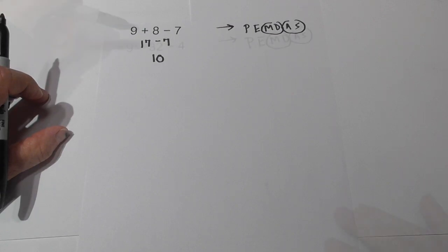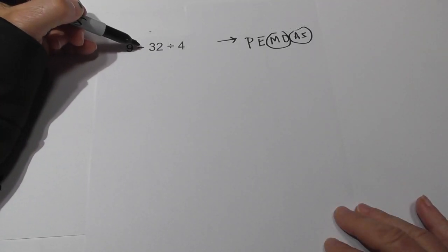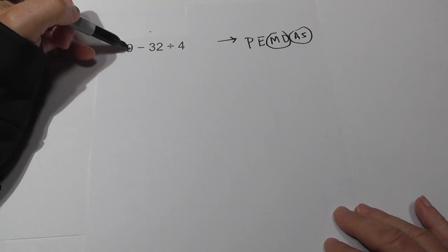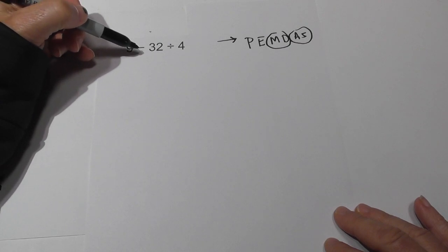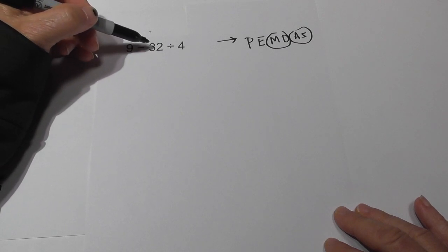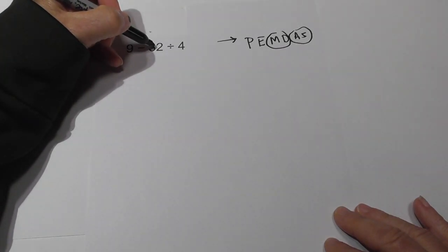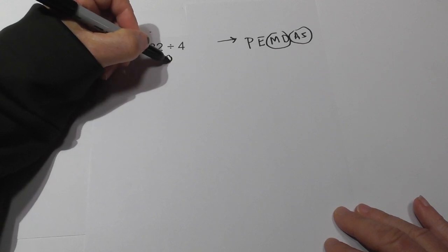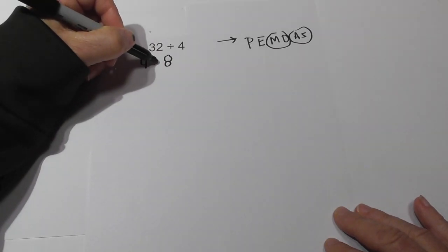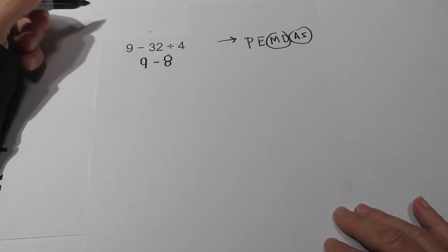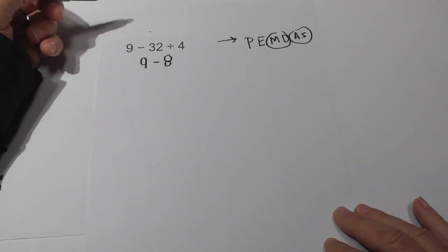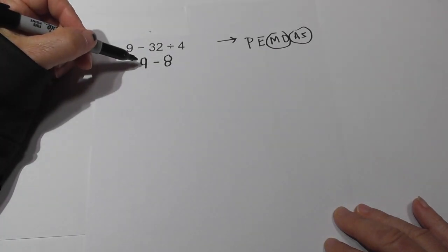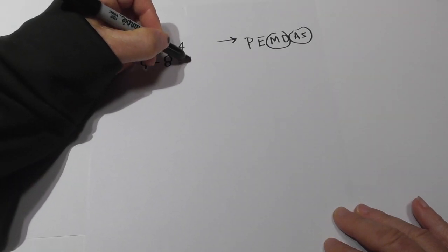Problem 3: you might wonder whether to subtract first or divide. Working left to right — no parenthesis, no exponents. Do we have multiplication or division? Yes. So 32 divided by 4 is 8. Bring down the 9. Now 9 minus 8 equals 1.